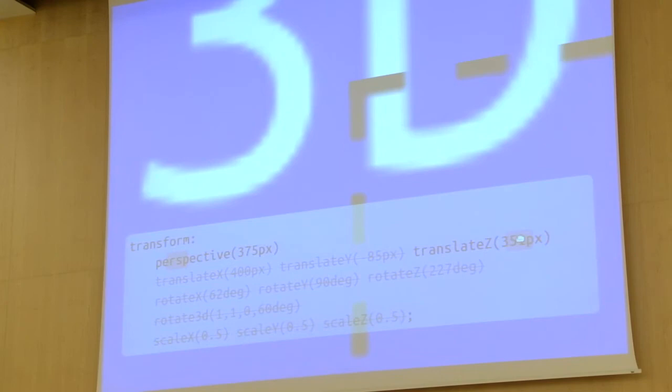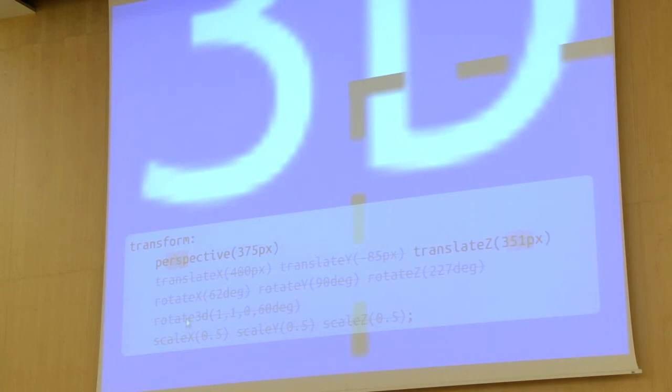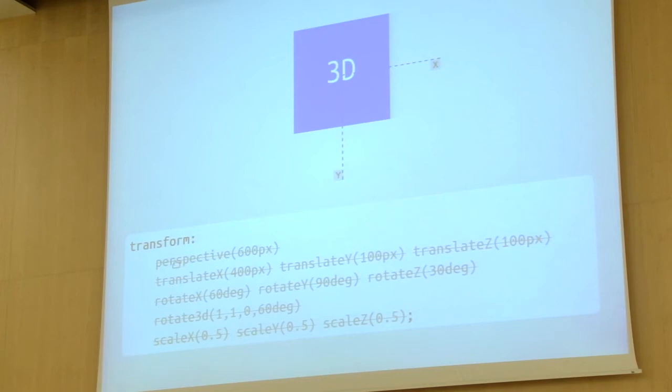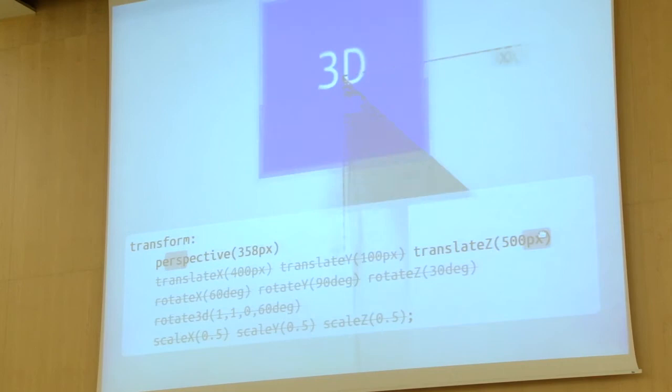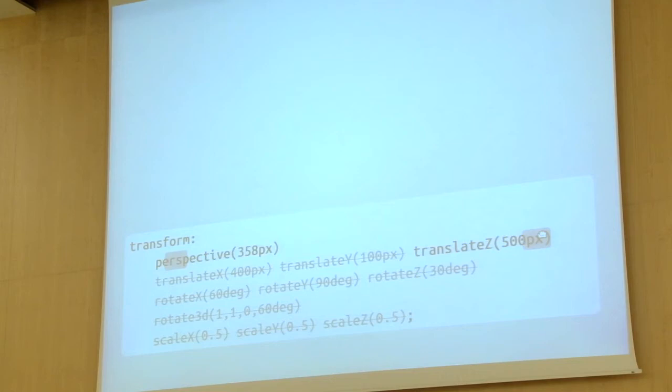What happened? Right now it's very close — it's 350 and our perspective is 375. The demo effect — I've lost control of it. A quick refresh will fix that. If our translateZ is bigger than the perspective, the element is not visible at all because it's actually behind your heads right now.